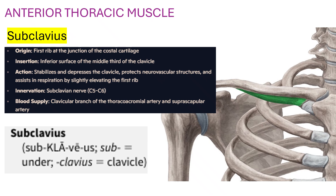Innervation is the subclavian nerve, C5, C6. Blood supply is the clavicular branch of the thoracoacromial artery and subscapular artery, and suprascapular artery. Sub means under, clavius means clavicle — so Subclavius means under the clavicle.